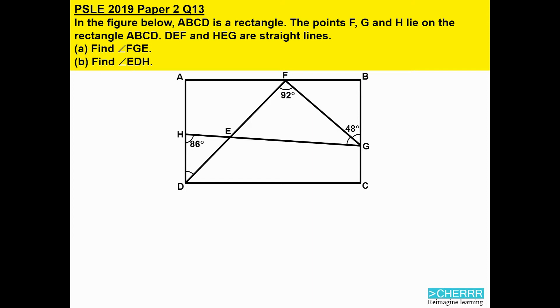In the figure below, ABCD is a rectangle. The points F, G and H lie on the rectangle ABCD. D, E, F and H, E, G are straight lines.